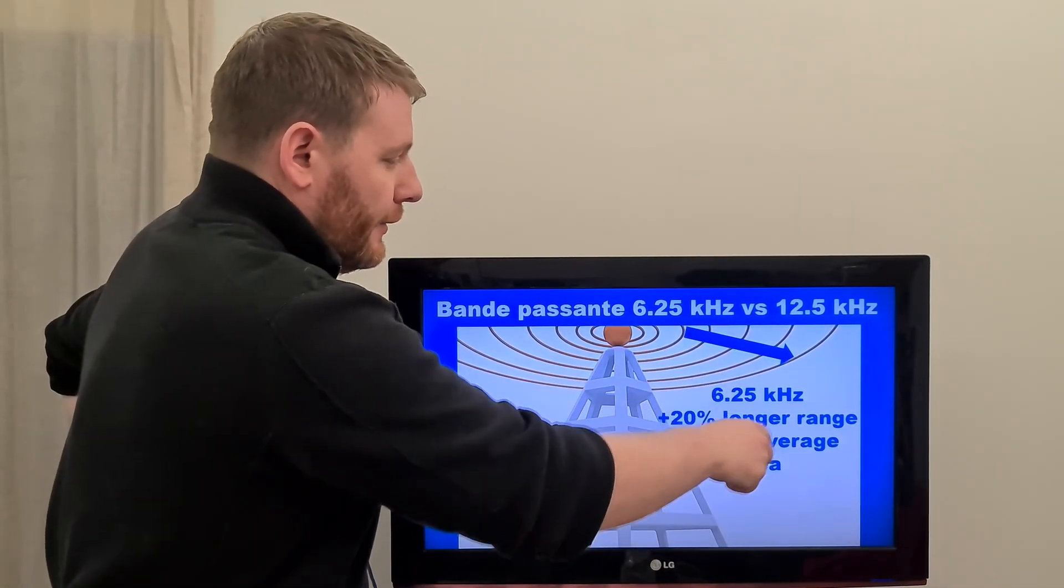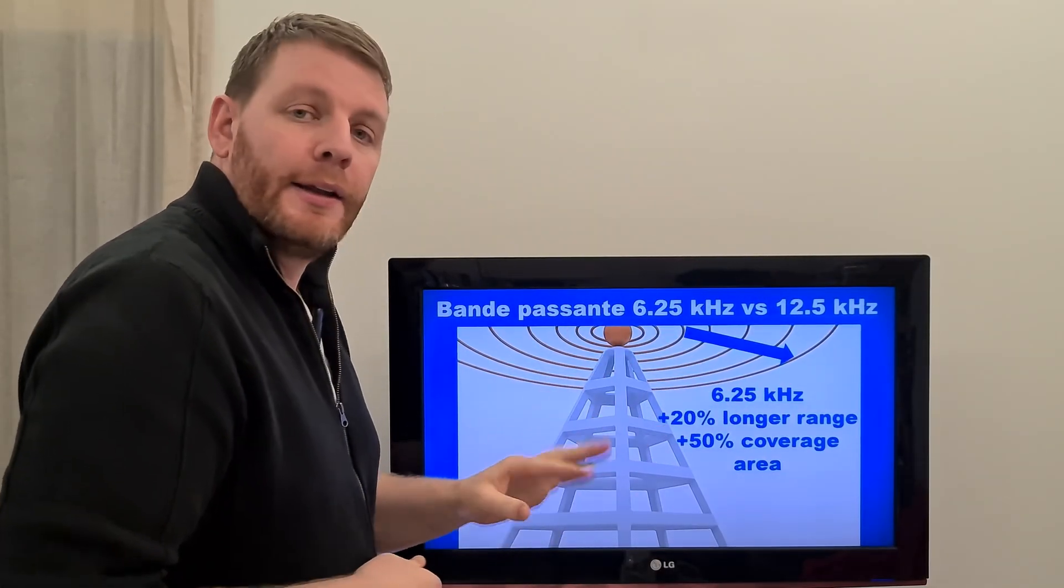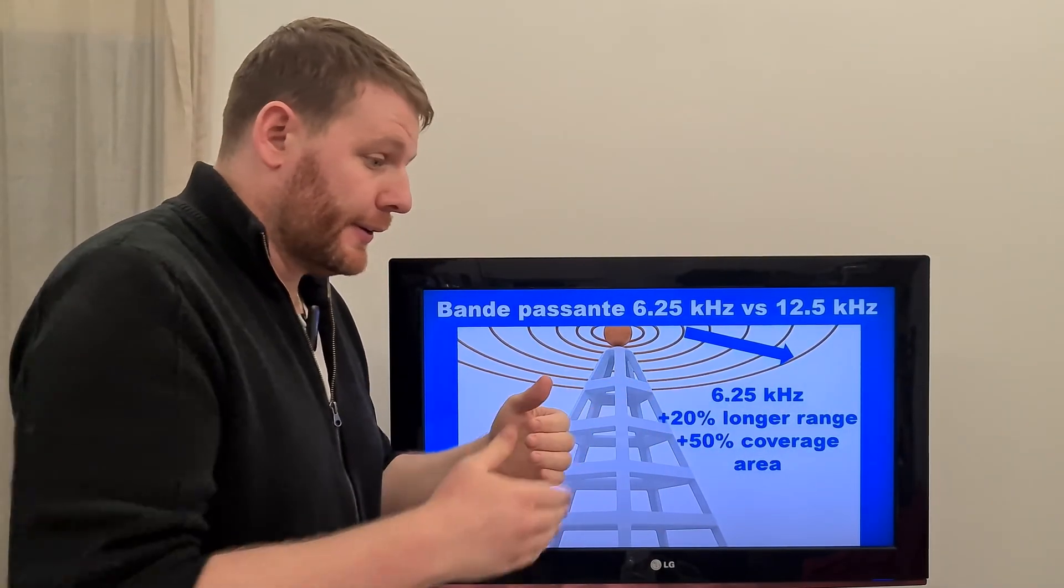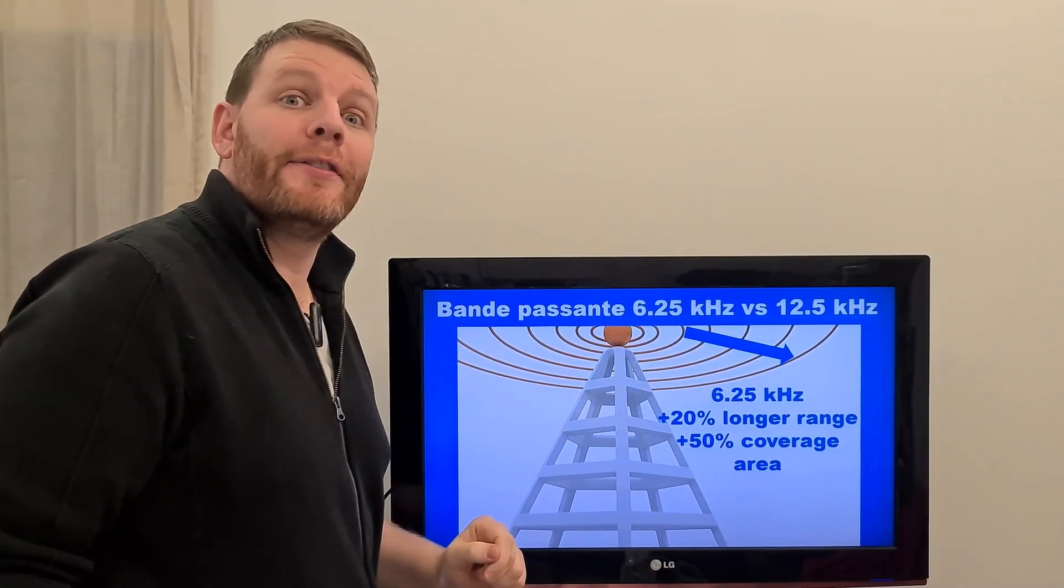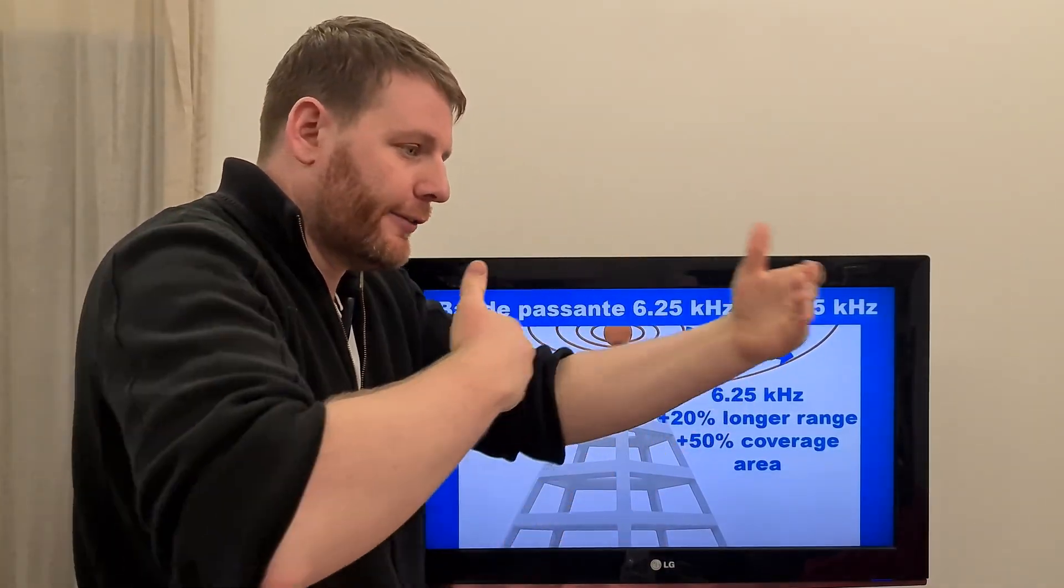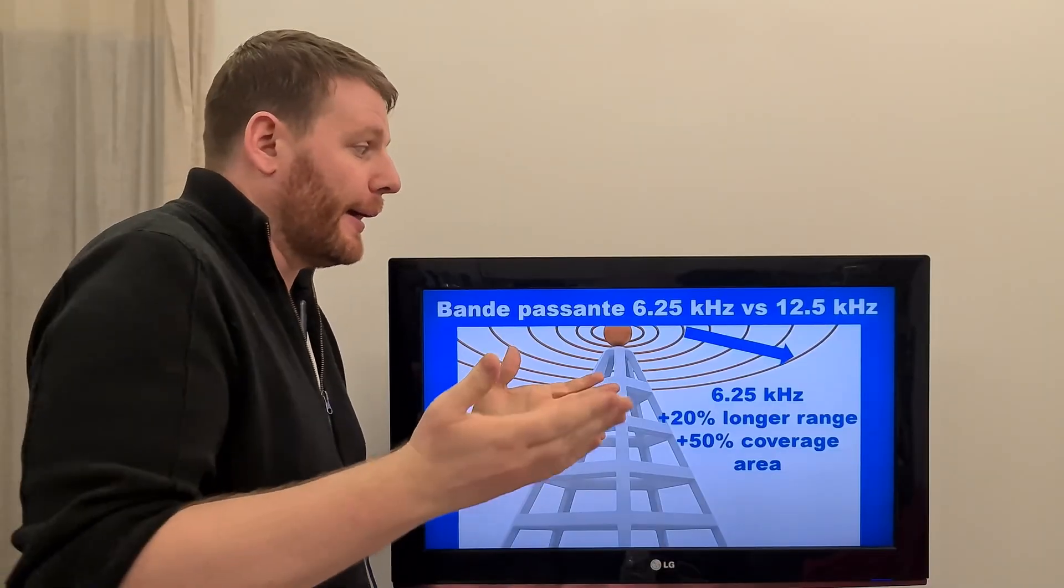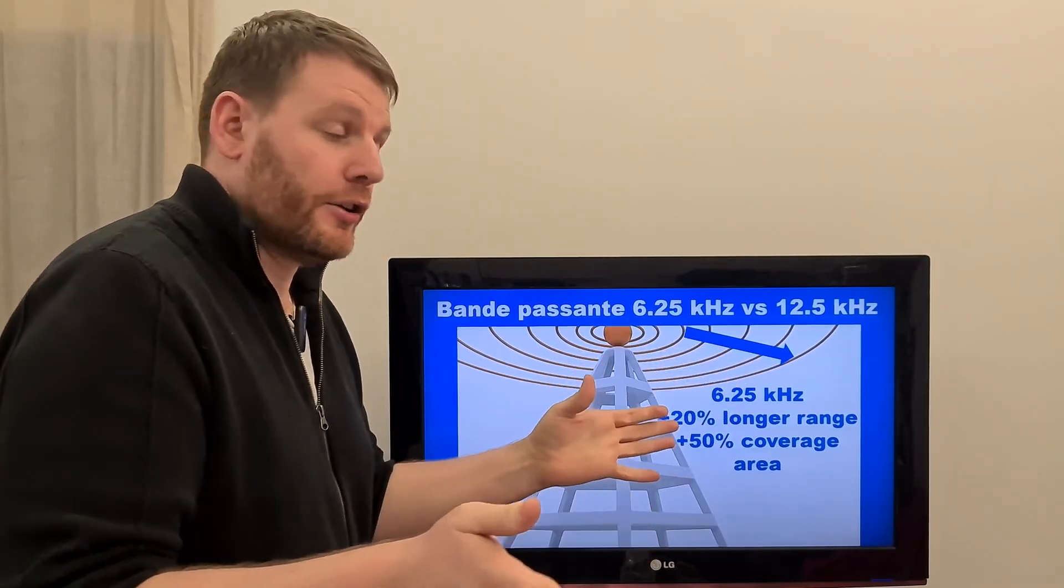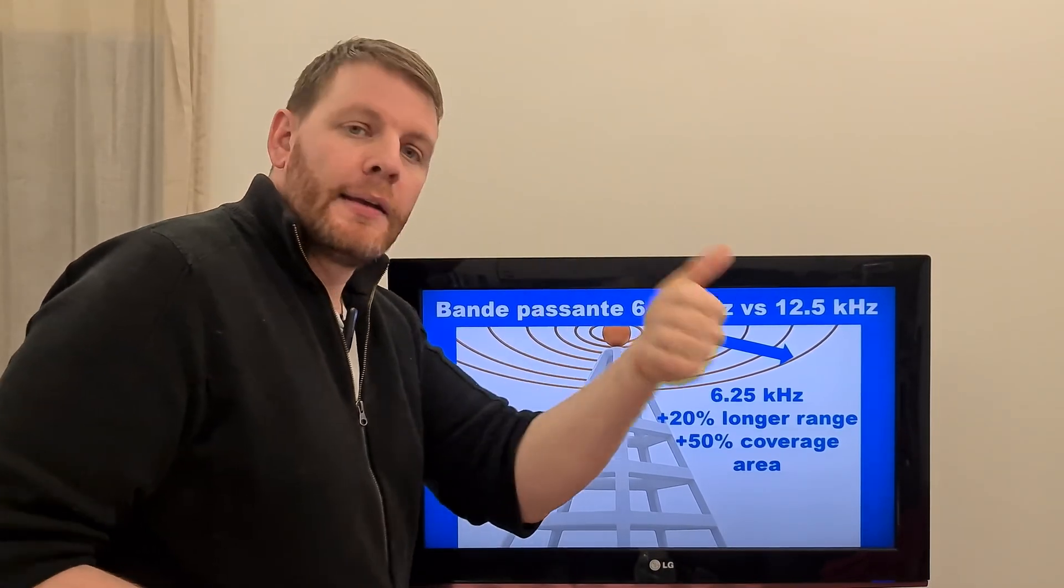Using the 6.25 kHz increase the range of approximately 20%, plus 20%, and if you compute, plus 20% of covered range, it increases the coverage area of 50%, the covered area. You have half more covered area. Sorry for my English, it's a good practice for me.